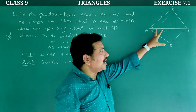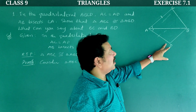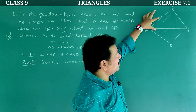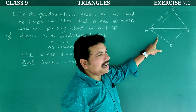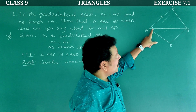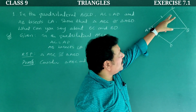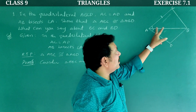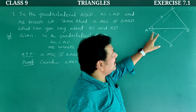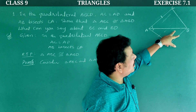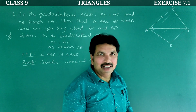In triangles ABC and ABD: this triangle has AC and this triangle has AD — they are equal. Next, AB bisects angle A, so angle BAC is equal to angle BAD. Next, for the two triangles, AB is the common side.